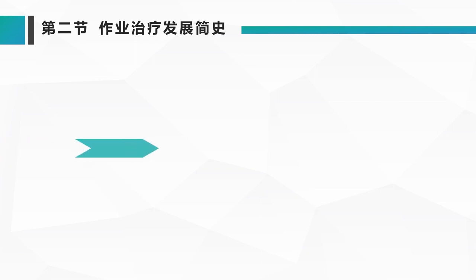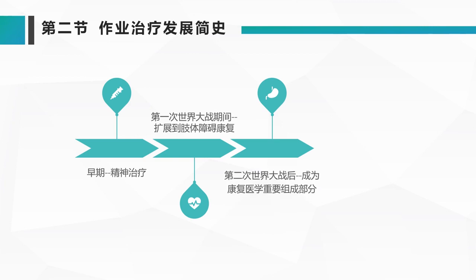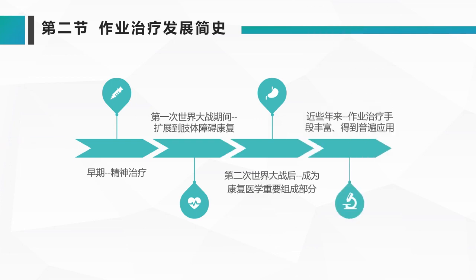第二节，作业治疗的发展简史。在早期，作业治疗被看成一种精神疗法，只是一种简单的心理和精神疗法。到第一次世界大战之后，作业治疗发展到肢体障碍康复的阶段。到第二次世界大战以后，作业治疗成为康复医学的重要组成部分。近几年来，作业治疗的手段越来越丰富，而且得到了普遍的应用。